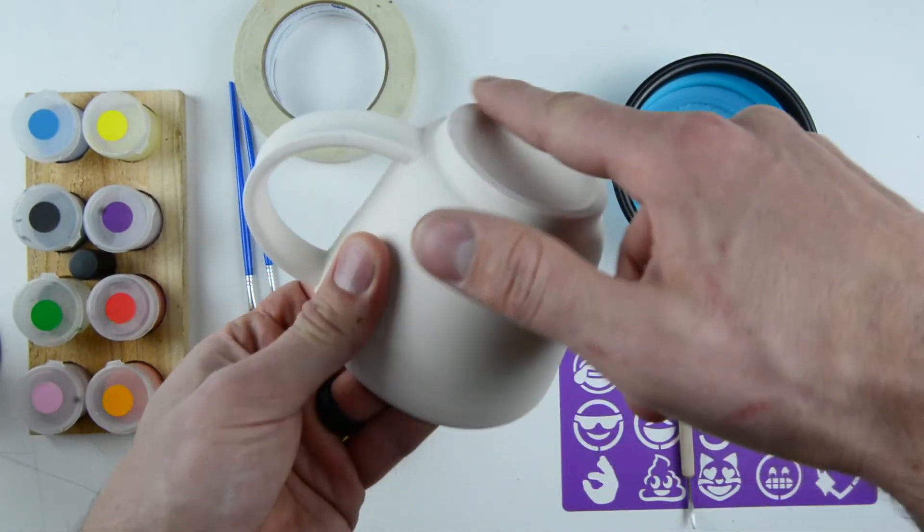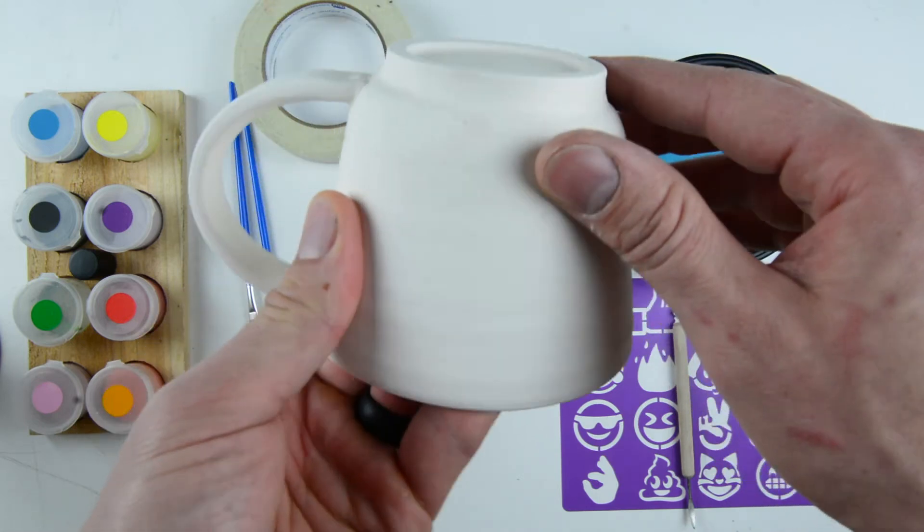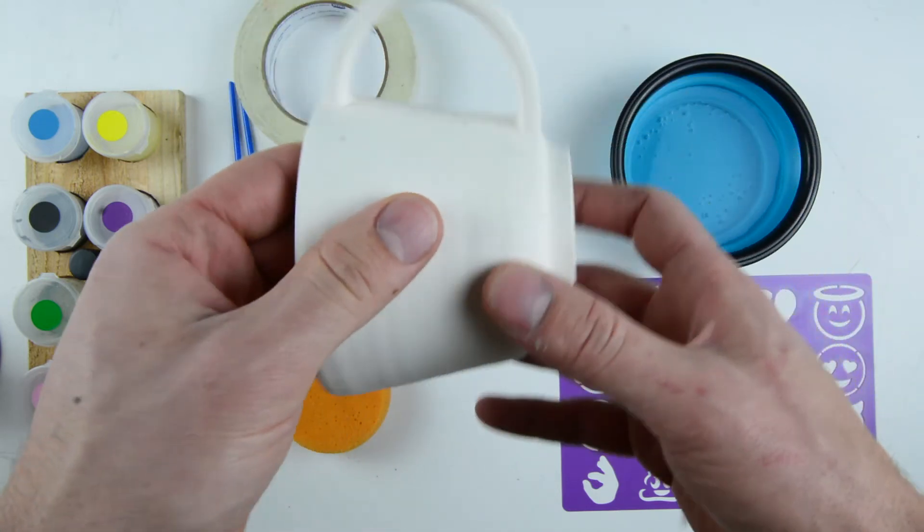At the bottom of the mug, you'll notice a rim along its edge. This is called the foot of the mug. Try your best not to paint on the bottom of the foot.